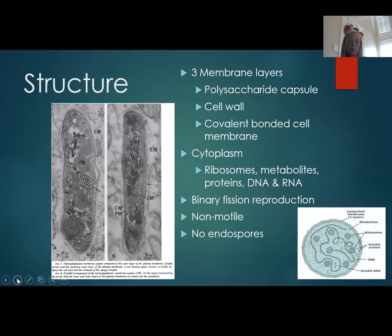The cytoplasm contains ribosomes, metabolites, proteins, DNA, and RNA. This is where translation, multiplication, and reproduction occur. It uses binary fission to divide, which is the most common type of asexual reproduction in bacteria.